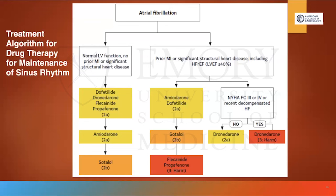For maintaining sinus rhythm, in patients with normal LV function and no history of MI or structural heart disease, dofetilide, dronedarone, flecainide, and propafenone are Class 2A, as is amiodarone. In patients with LV dysfunction, prior MI, or significant structural heart disease, amiodarone and dofetilide are the primary options. Notably, dronedarone should not be used in patients with reduced EF who are NYHA Class 3 or 4, or recently decompensated heart failure.